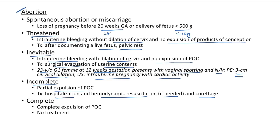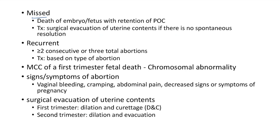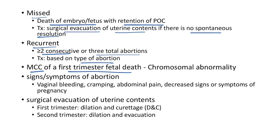Complete abortion — complete expulsion of products of conception; no treatment needed. Missed abortion — death of embryo or fetus with retention of products of conception; treat with surgical evacuation if no spontaneous resolution. Recurrent abortions — ≥2 consecutive or 3 total abortions; treatment based on type. The most common cause of first-trimester spontaneous abortion is chromosomal abnormality. Signs and symptoms: vaginal bleeding, cramping, abdominal pain, and decreased signs of pregnancy.